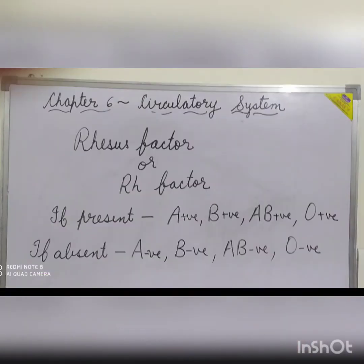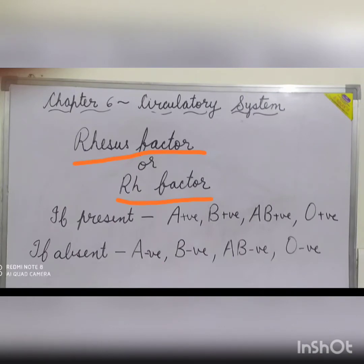The RH factor, also called the rhesus factor, is a type of antigen — or you can say it is a type of protein — which was first found in the RBCs of the rhesus monkey, and so it is named the rhesus factor, or in short the RH factor.